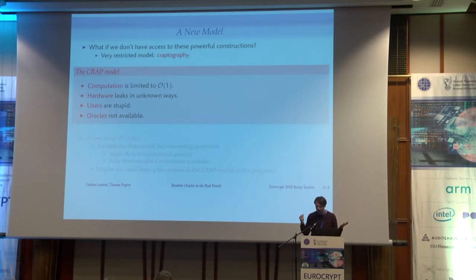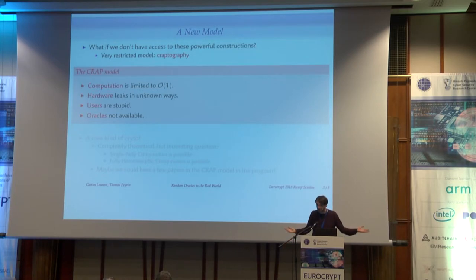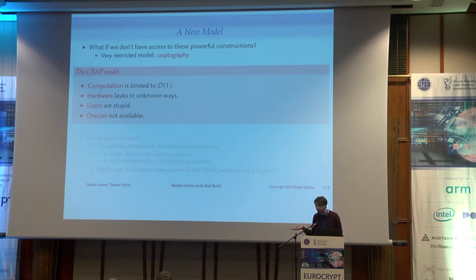There are various ways to define this model. One way is to just limit the amount of computation you can do — maybe you can only do a constant amount of computation. This really changes everything, because now asymptotic analysis doesn't mean anything — it's a completely different model. Another way would be to look at what happens with your hardware. Maybe it's not perfect, there's some leakage, and maybe you cannot even bound this leakage. Then we need a different kind of crypto.